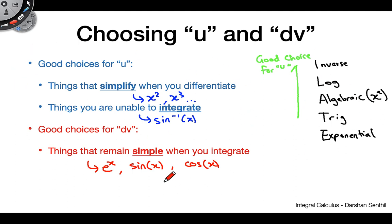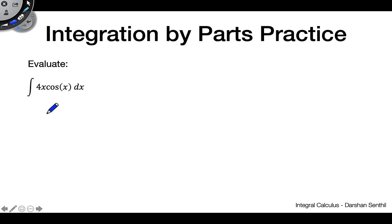That's all I'll say on that — let's go ahead and solve some problems. First example: the integral of 4x cosine of x dx. We'll do this using the regular integration by parts method. Take a second, pause the video, and see if you can figure out the optimal choice for u and the optimal choice for dv.